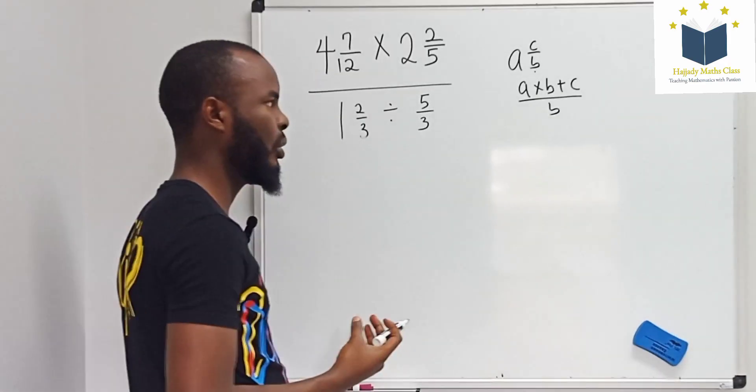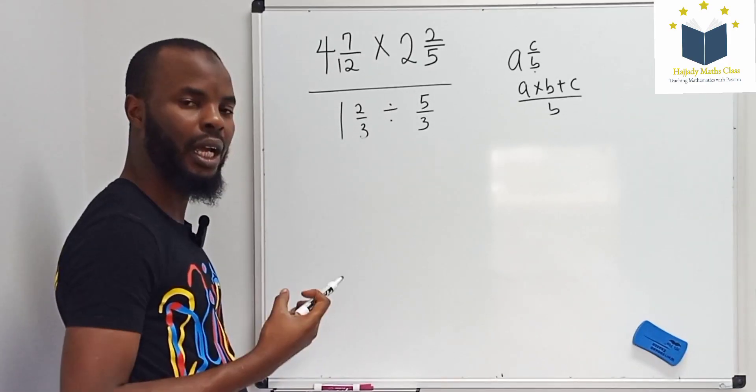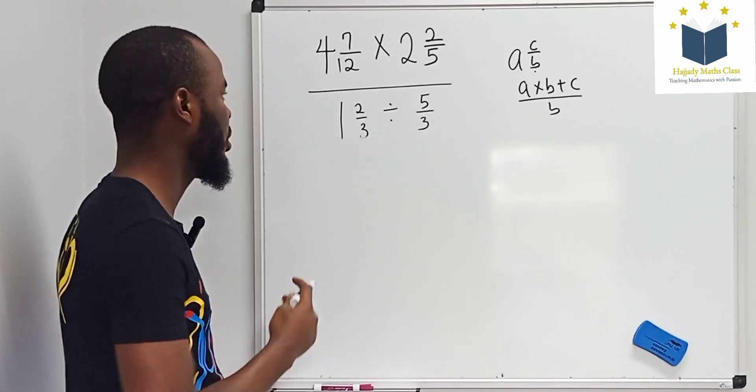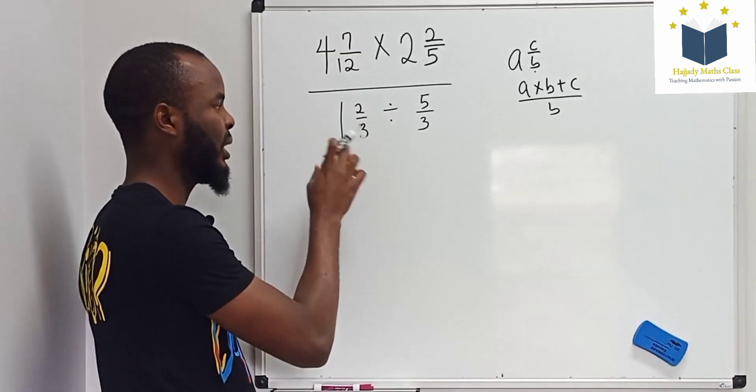You multiply the whole number with the denominator and you add it with the numerator, so it's going to give you over the denominator. So the same rule is going to be applicable here.